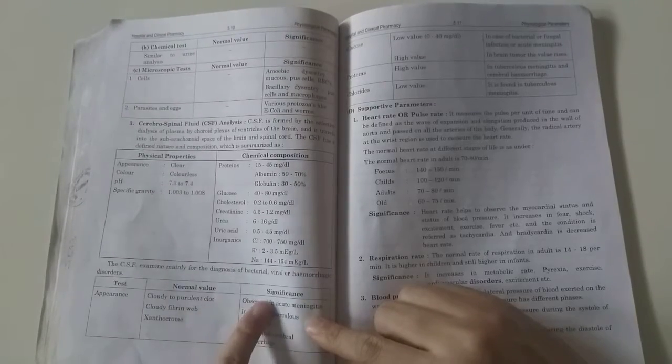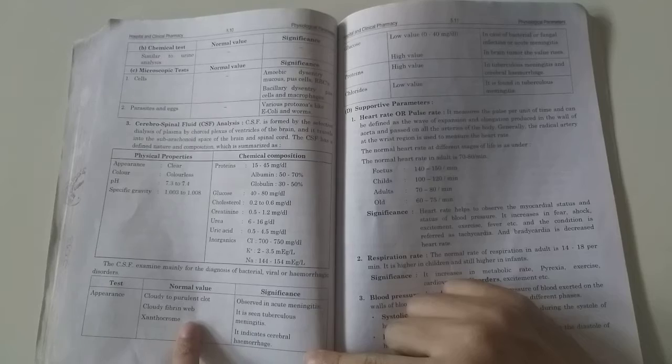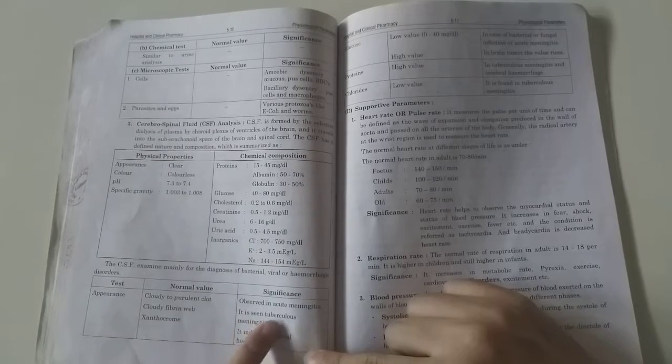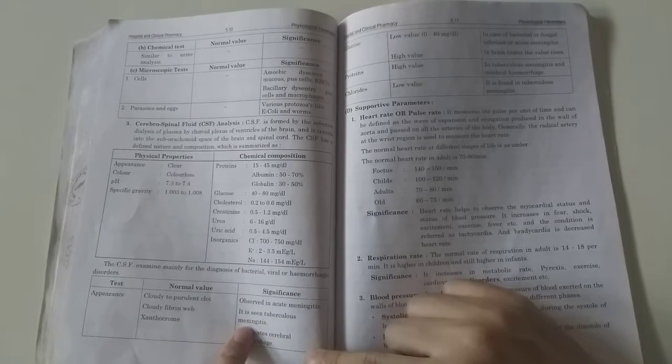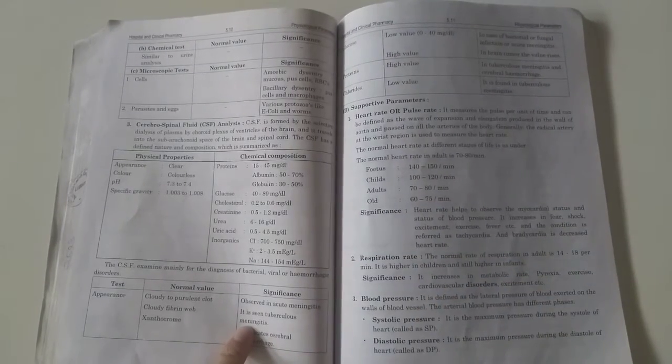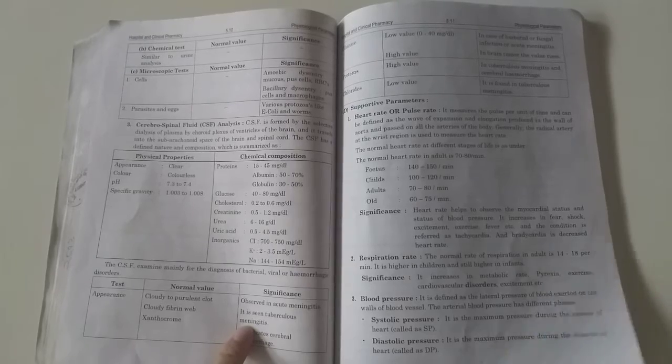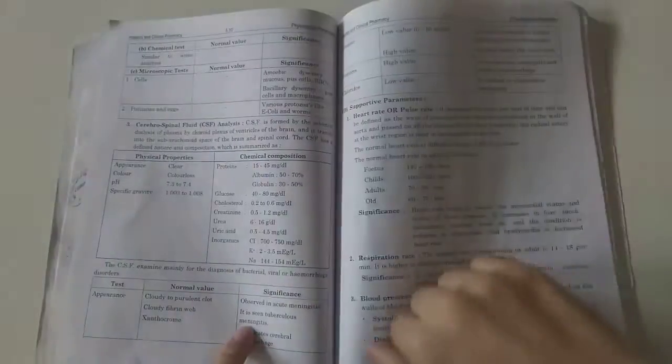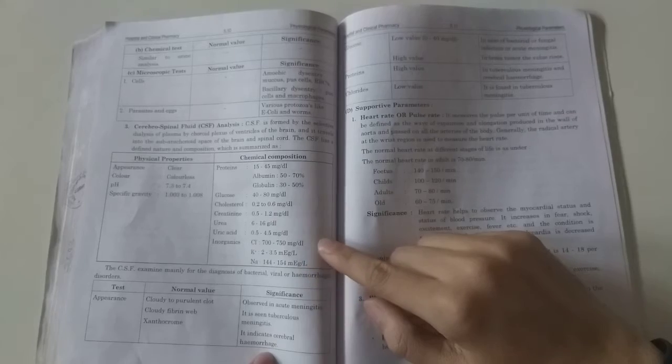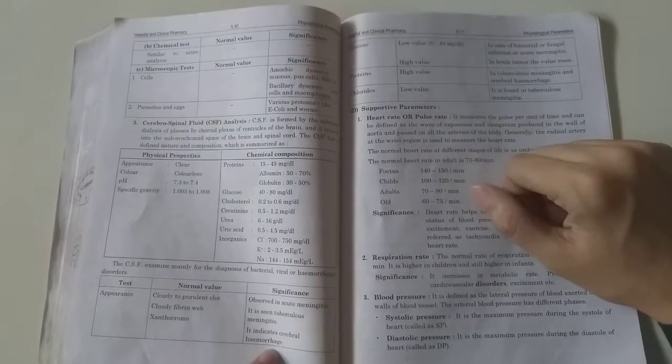Cloudy appearance is seen in acute meningitis. Cloudy fibrin web is seen in tuberculosis and meningitis. When we have tuberculosis, we have to evaluate CSF in severe situations. Xanthochrome indicates cerebral hemorrhage, which means bleeding.